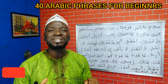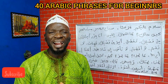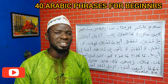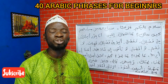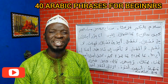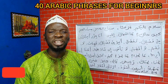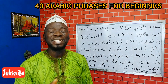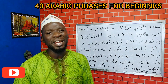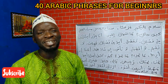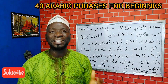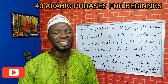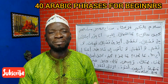The next word is ahtaju, which means I need. Haajatun means need. Ahtaju kalaman — I need a pen. Ahtaju ustadhan — I need a teacher. Ahtaju waladan — I need a boy.